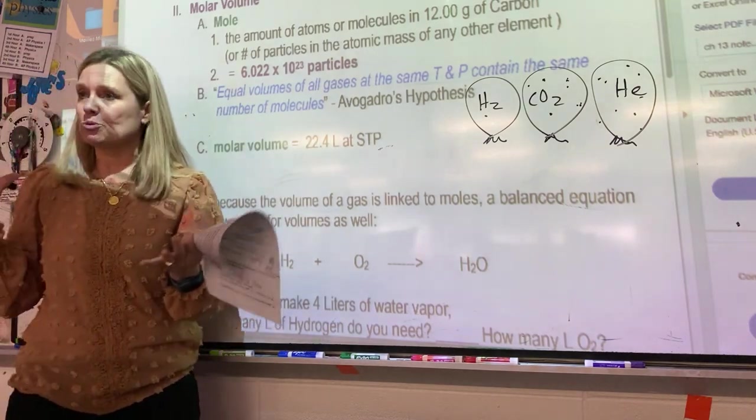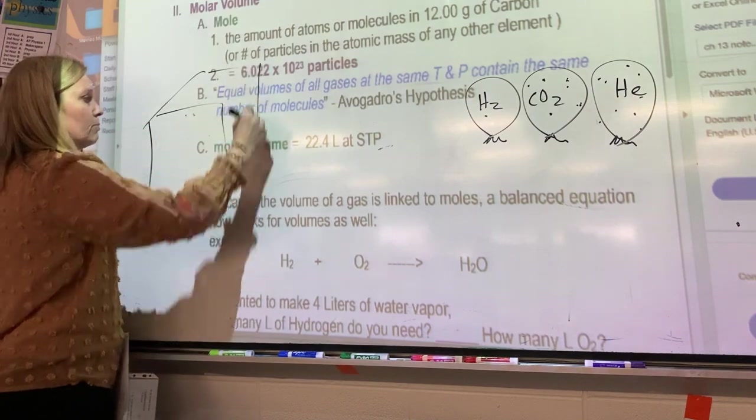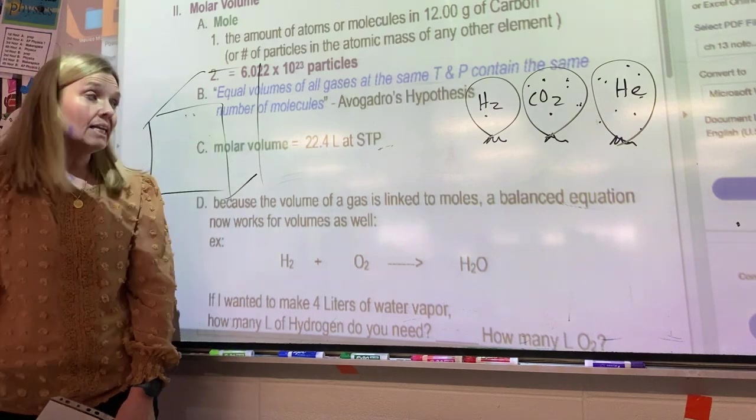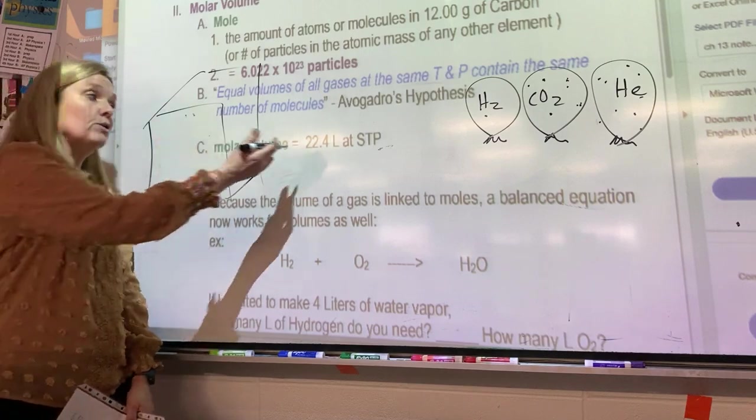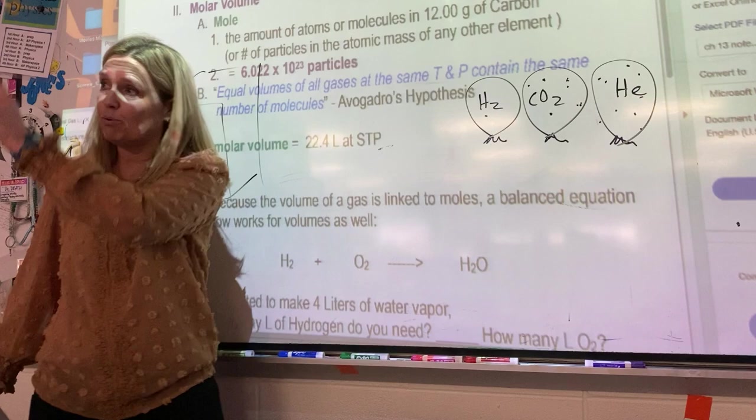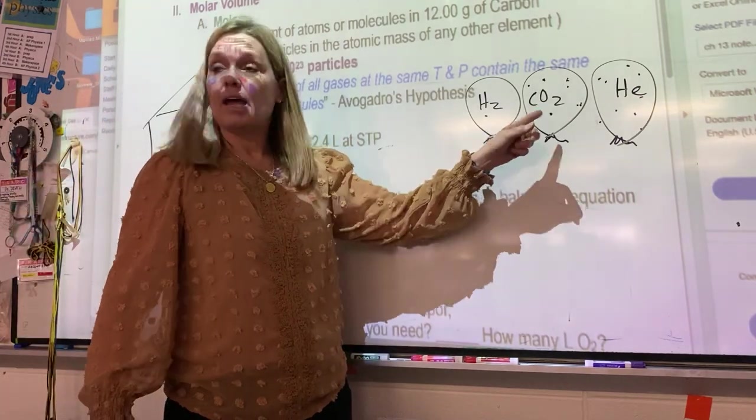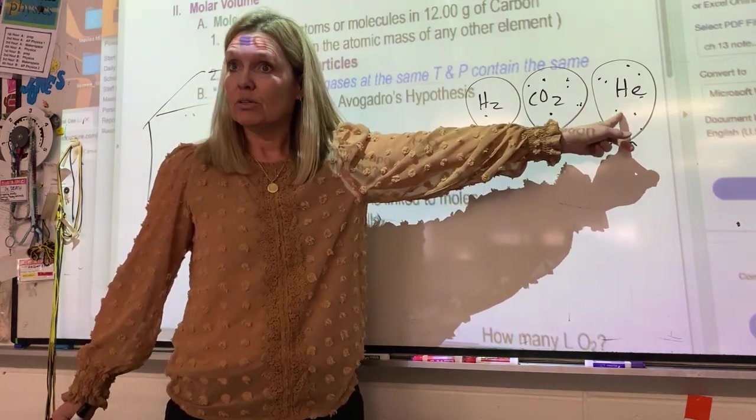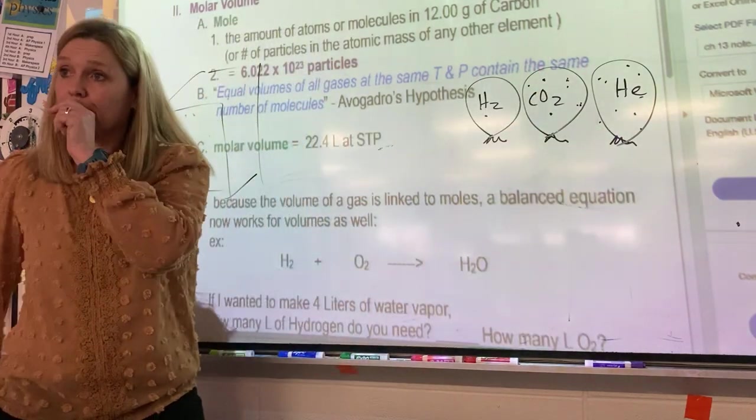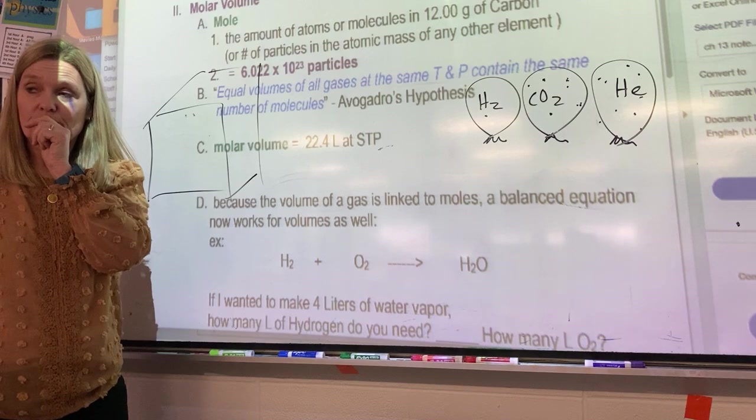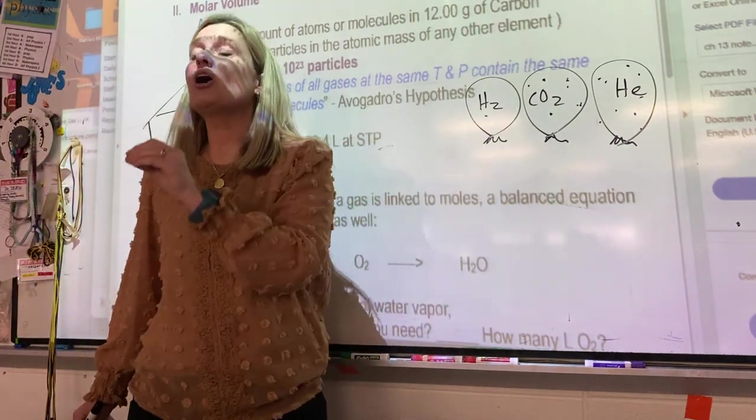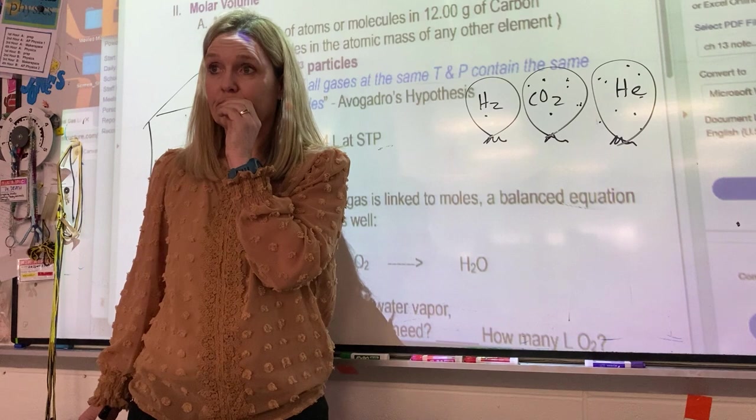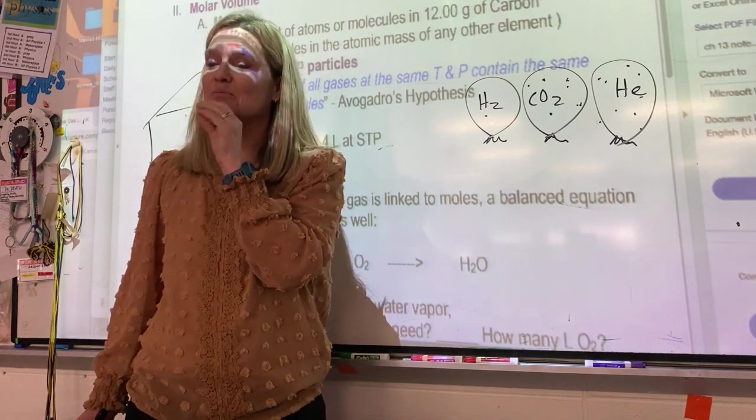This is important. So we have something called molar volume. And our friend STP comes back again. 22.4 liters contains one mole of a gas. Any gas? And then you would know if you had 22.4 liters of hydrogen, you know how much it would weigh. It would weigh 2.02 grams. And this one would weigh 44 grams. And this one would weigh 4.002. So balloons with helium float because the buoyant force is greater than its weight.